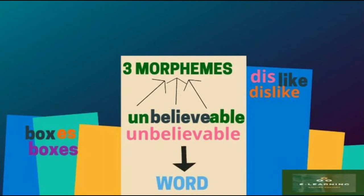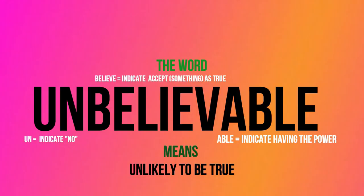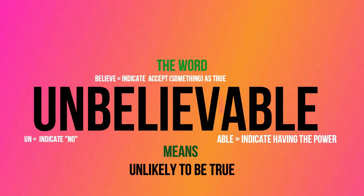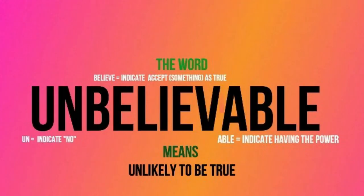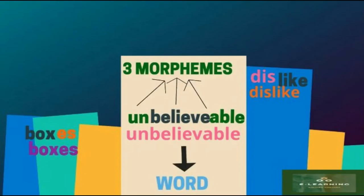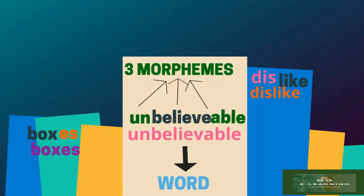A morpheme is the smallest unit of language. From one word, more than one morpheme can be identified. Each morpheme has its own meaning. A word, on the other hand, is something listed in the dictionary and it has its surface meaning.